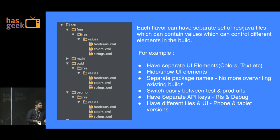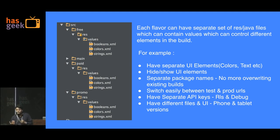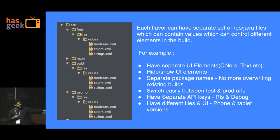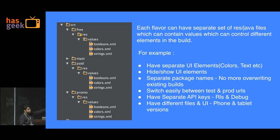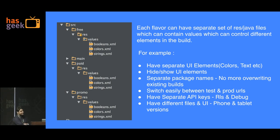A lot of people use this for API keys as well. With Maps as an example, you have an unlimited debug key and a release key. That can be configured so you know which key to use based on your build type at runtime. You could also adapt this for phone and tablet versions, since you have access to the entire resource folder and also to the Java files, so you can have two different Java files pointing to the same activity.